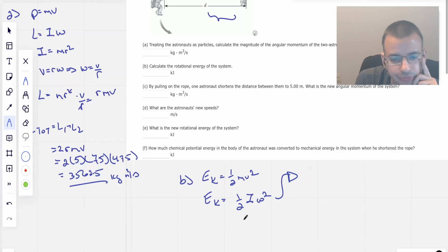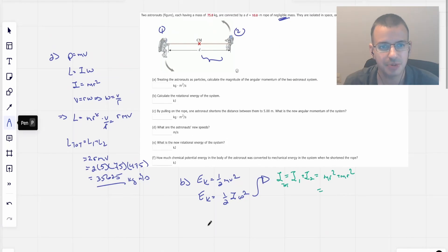I total will be i1 plus i2, because we're just going to add the moments of inertia of both astronauts. Just like mass, if you have two blocks of mass, their total mass is both of them together. So it's going to be mr squared plus mr squared. This becomes 2mr squared.